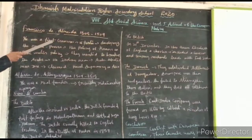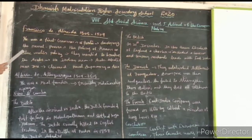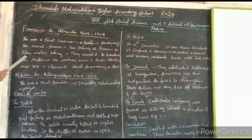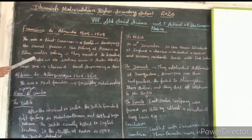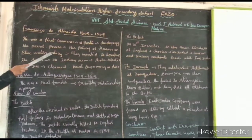Francisco d'Almeida, from 1505 to 1509, was the first Portuguese Governor. He wanted to develop naval power in the Indian Ocean. His policy was known as the Blue Water Policy. Why was his policy called the Blue Water Policy? Because he wanted to occupy the Indian Ocean and defeat the Arabs in that area. So he followed the Blue Water Policy.